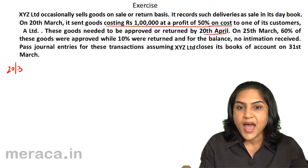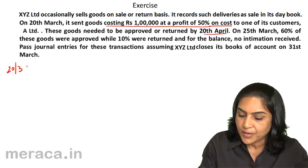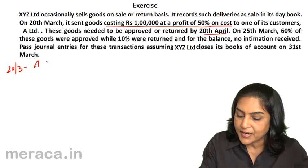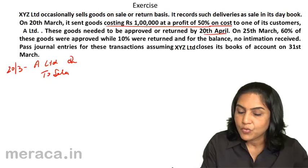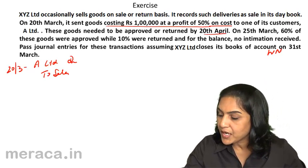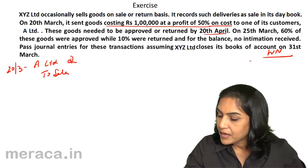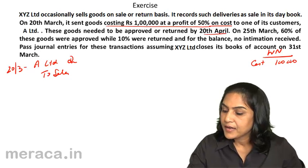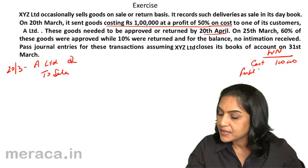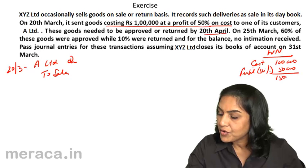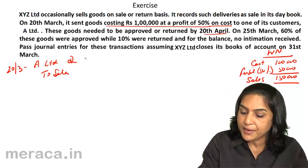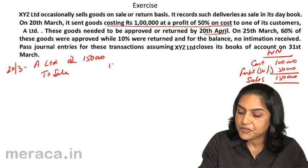We will record it as an ordinary sale transaction. The debtor is A Limited — A Limited debit to Sales. Working notes: cost is ₹1 lakh, profit is 50% on cost, so profit is ₹50,000. Therefore, the sale value is ₹1,50,000. Entry: A Limited Dr to Sales ₹1,50,000.